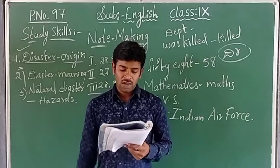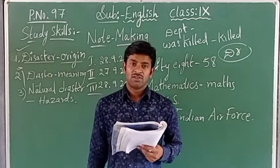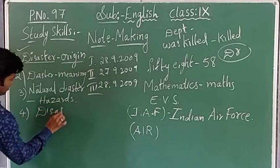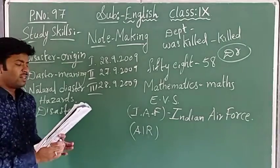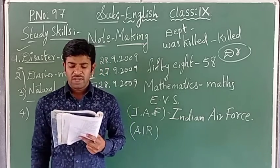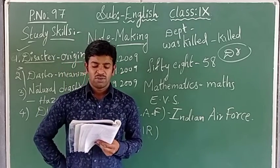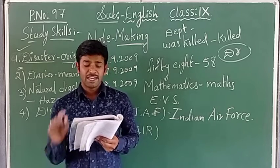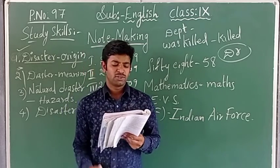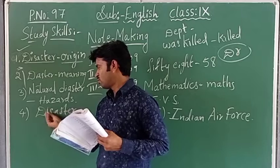Fourth note point: disaster causes. Human vulnerability and lack of appropriate emergency management leads to financial, environmental and human loss. This becomes the fourth disaster note point.